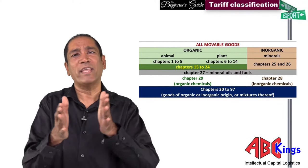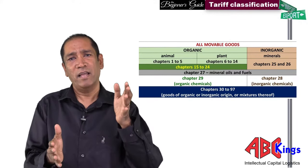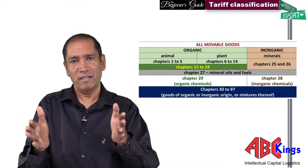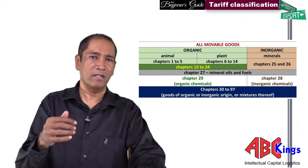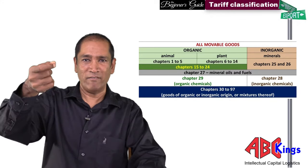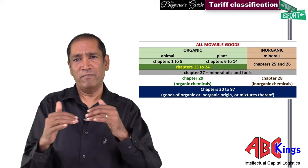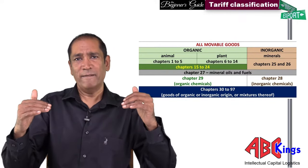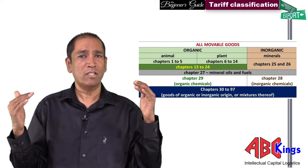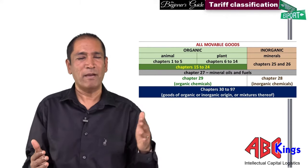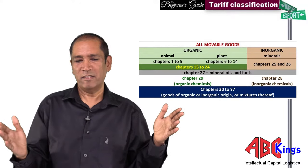Chapter 29 is organic chemicals — those are chemicals derived from plant and animal, and their chemical formula predominantly contains carbon. From chapter 30 to 97, goods are derived from anywhere in chapters 1 to 29. For example, chapter 30, which follows chapter 29, is pharmaceuticals. Pharmaceuticals can come from plant, from animal, or from under the earth.